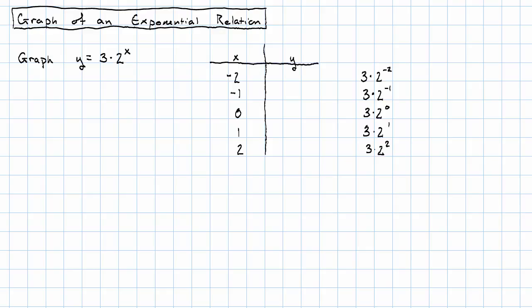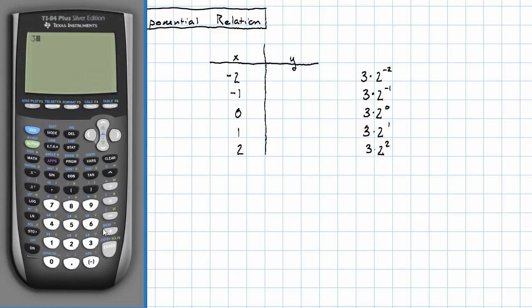I'm just going to do this on my calculator. We'll have 3 times 2 to the negative 2. It's going to be easier to graph as a fraction. 3 fourths, 3 times 2 to the negative 1, 1.5, that's 1 and a half.